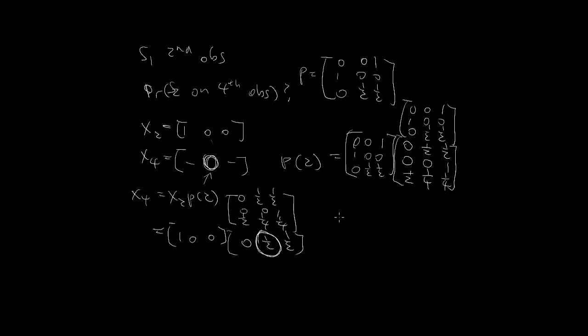So there is a 1 half probability that it will be in state 2 on the fourth observation given it's state 1 on the second. This is one way to do it.